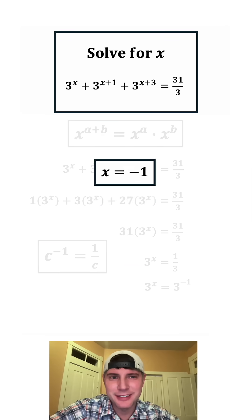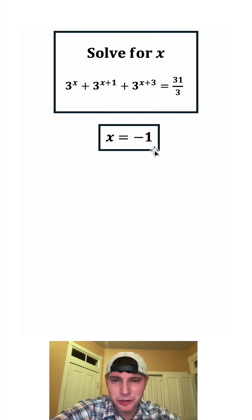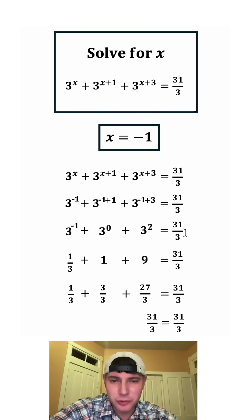How exciting. I'm a little disappointed that it's not some crazy answer. But on a positive note, it'll be easy to check. Here's all the work right here. So we just plugged in negative 1 for all the x's. And it simplifies out to 31 thirds equals 31 thirds. So x equals negative 1 works.